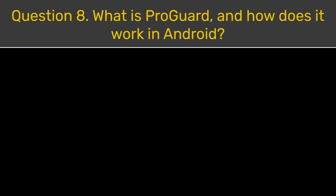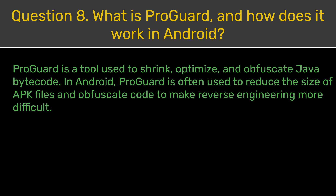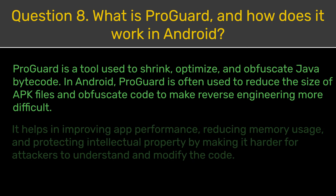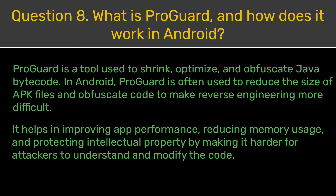Question 8. What is ProGuard and how does it work in Android? ProGuard is a tool used to shrink, optimize, and obfuscate Java bytecode. In Android, ProGuard is often used to reduce the size of APK files and obfuscate code to make reverse engineering more difficult. It helps in improving app performance, reducing memory usage, and protecting intellectual property by making it harder for attackers to understand and modify the code.